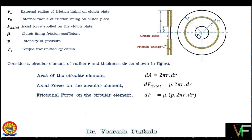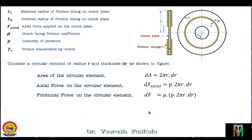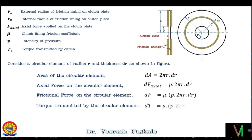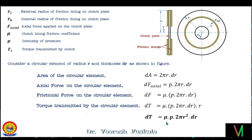The torque transmitted by the elemental area equals the frictional force times the moment arm about the axis. The moment arm is the radius r, so the elemental frictional torque is dT = μ·p·2πr·dr × r, which gives dT = μ·p·2π·r²·dr. This is the elementary analysis.